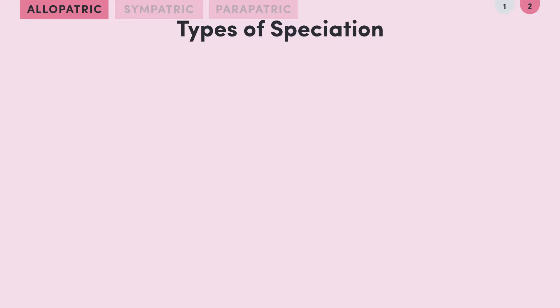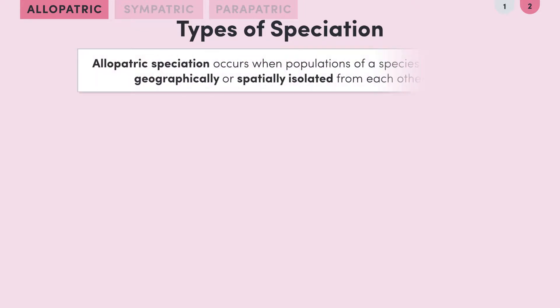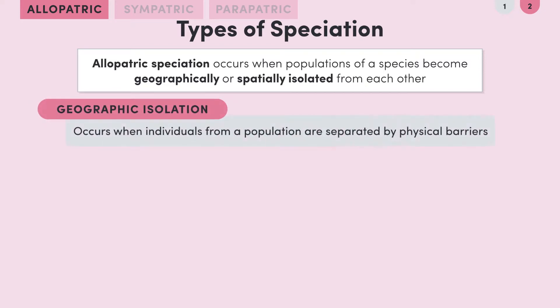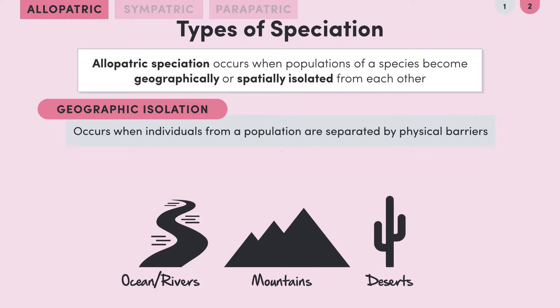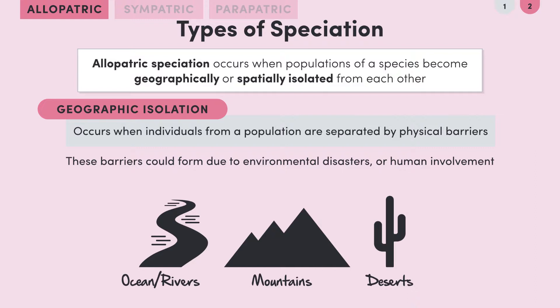First up, allopatric speciation. Allopatric speciation occurs when populations of a species become geographically isolated from each other. This tends to be due to a physical barrier like an ocean, river, mountain range or desert. These barriers could form due to environmental disasters like earthquakes and floods, or even direct human involvement like habitat fragmentation — when human activities like deforestation can cause a large habitat, such as a rainforest, to be split into separate sections.